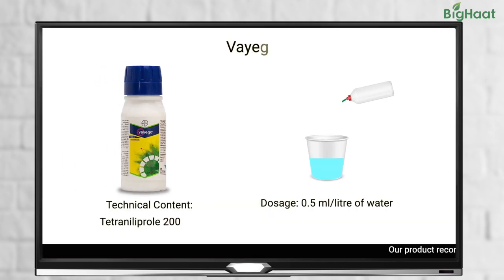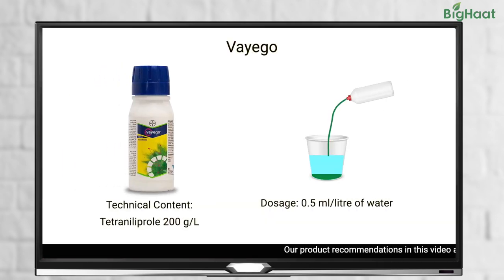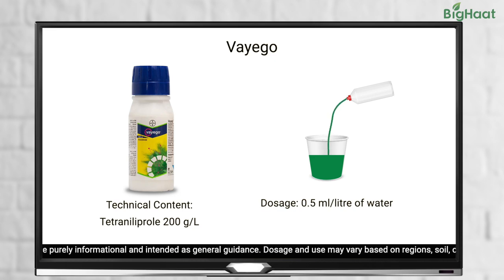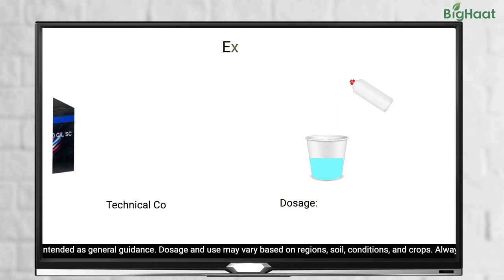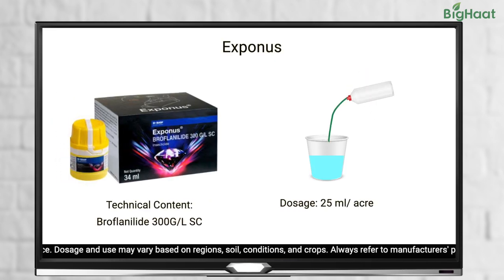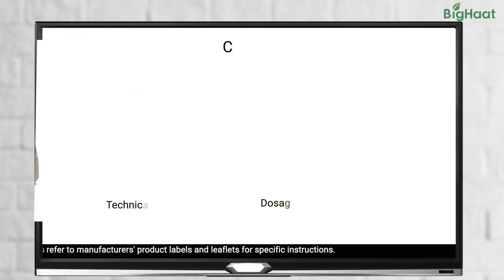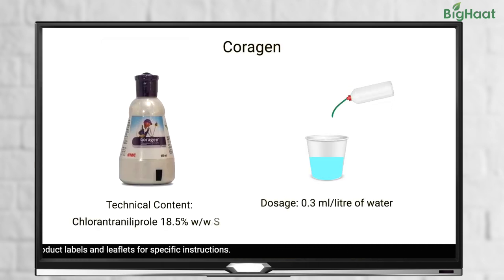To control Tuta absoluta or pinworm, use 0.5 ml of Yajo in 1 litre of water, or 25 ml of Exponis per acre. You can also use 0.3 ml of Coragen in 1 litre of water.